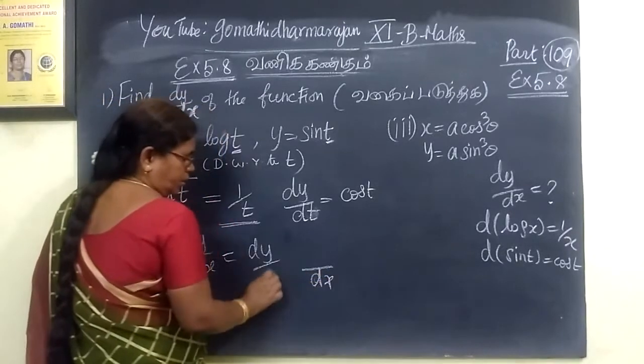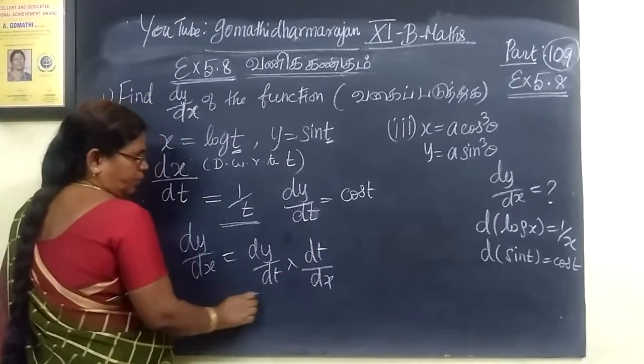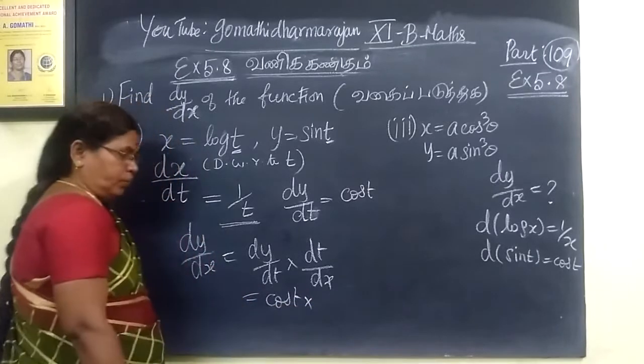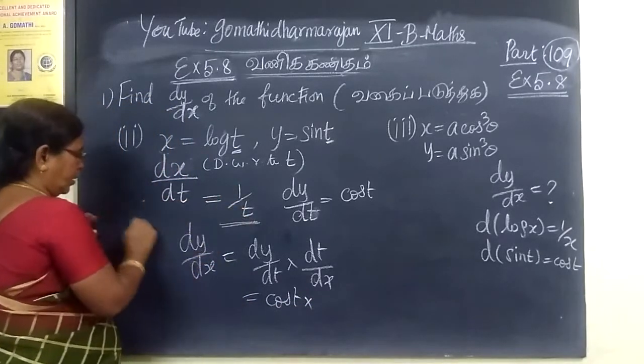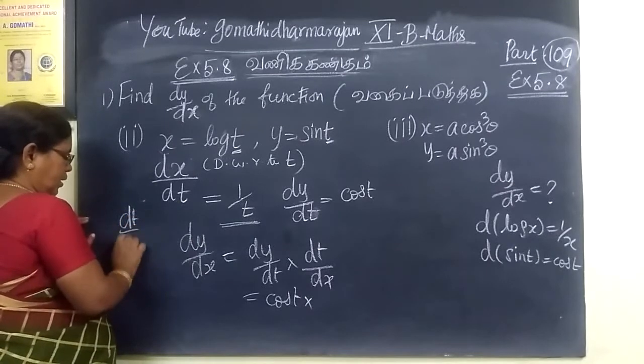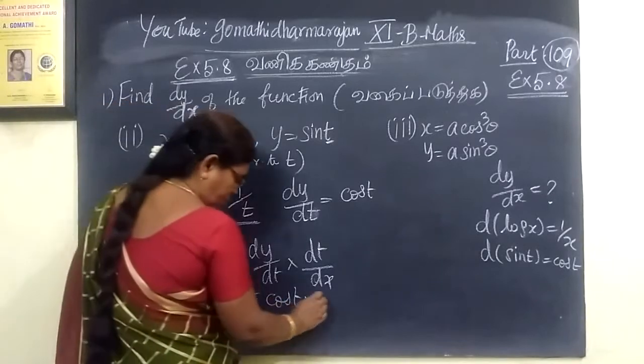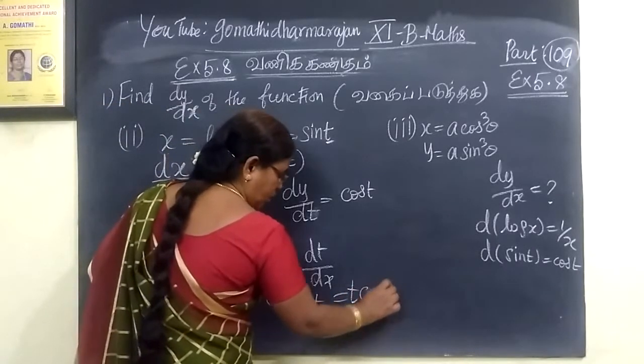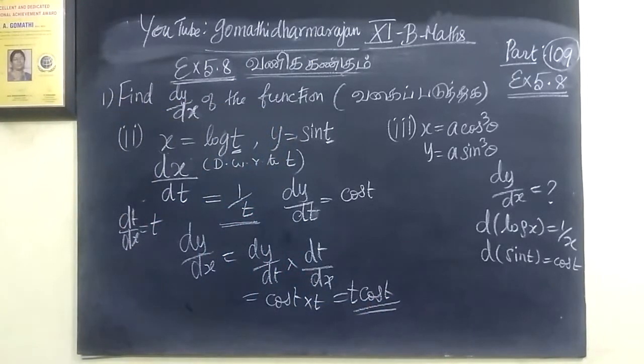dy/dθ, then dθ by dT, one by T. So the answer for this is cos θ divided by cos θ. So this one is corrected.